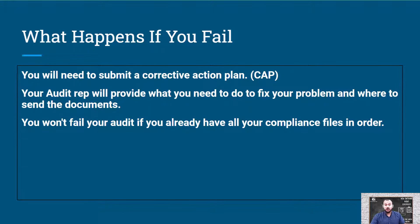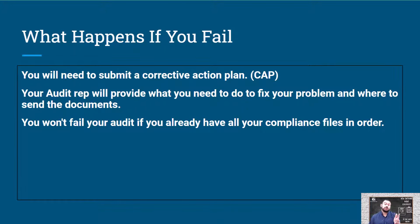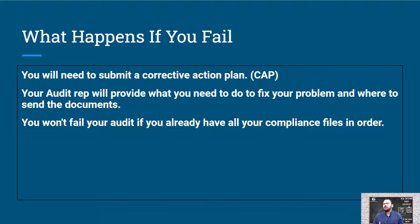You won't fail your audit if you already have all your compliance files in order. This isn't a case of whether you want to do the compliance files or not — you have to do it. Everybody who applies for a DOT authority agrees to abide by all of these items: the driver files, the vehicle, drug and alcohol consortium program, medical cards. You already agreed to it when you got your DOT. If you don't have it, they can come and revoke your authority.